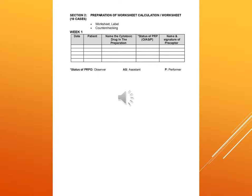Section 2 covers preparation of worksheet, calculation, and worksheet, with a minimum of 10 cases. Worksheet includes label and counter checking. There is a chart indicating date, patient, name of the cytotoxic drug in the preparation, status of PRP, and name and signature of the preceptor. The same pattern is followed in week 2.